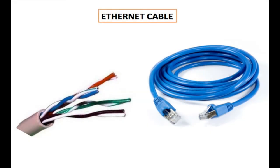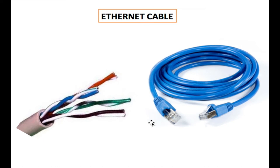Ethernet cables are commonly known as network cables. Every Ethernet cable has four pairs, which is eight wires, and these wires are divided in pairs within the Ethernet cable. An Ethernet cable is connected to RJ45 connectors at both ends, and these wires are connected to the connector in a particular order depending on whether it is a crossover cable or a straight-through cable. We're going to be talking about both types, along with the various categories from Category 5e right up to Category 8.